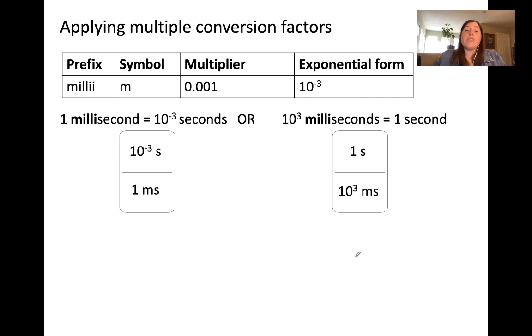This negative exponent indicates this type of relationship. We can also apply multiple conversion factors in a single problem. We'll practice that using milli as one of the prefixes and kilo that we talked about earlier. What we know from the table is that one millisecond is equal to 10 to the negative third seconds. Said another way, in one second, there are 10 to the third milliseconds because again, milliseconds is the smaller unit.